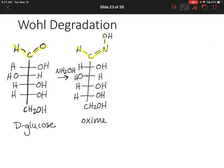Next, we're going to acylate by using an acid anhydride, written as Ac2O. This will turn our oxime into a cyanohydrin — so we're just turning our aldehyde group overall into a cyano group. Everything else stays the same.